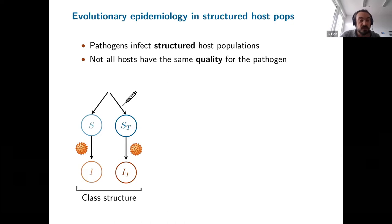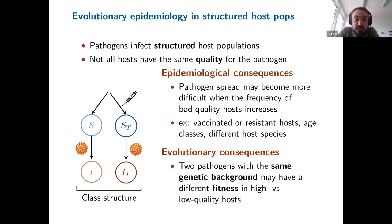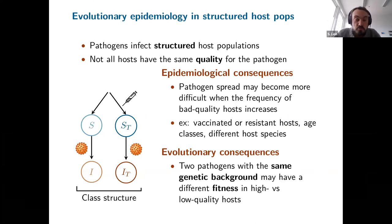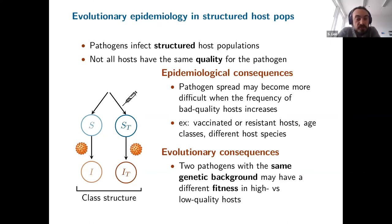The question is: if you have this class structure with some treated and some non-treated hosts, how is it going to affect the evolution of the parasite and also the epidemiological dynamics? The epidemiological consequences are often quite clear — you can expect that pathogen spread will be more difficult when you increase the frequency of bad-quality hosts. These different hosts can be vaccinated or treated hosts, different host species, or different age classes each with different transmissibilities. This is more or less easy to model with an ODE model with different classes, but the evolutionary consequences are more difficult to predict without doing the full model.